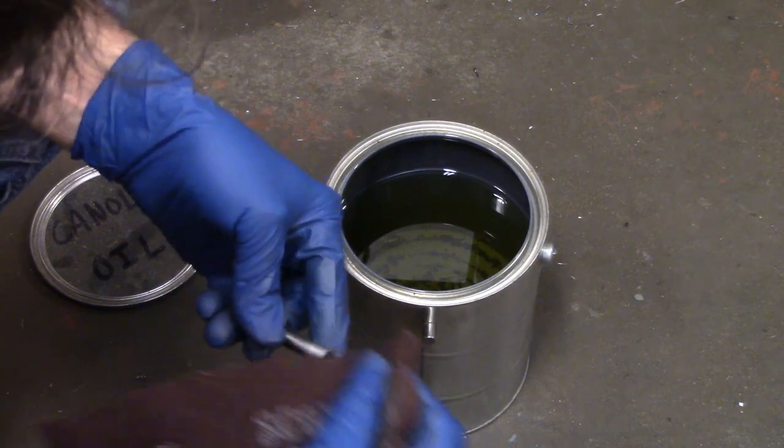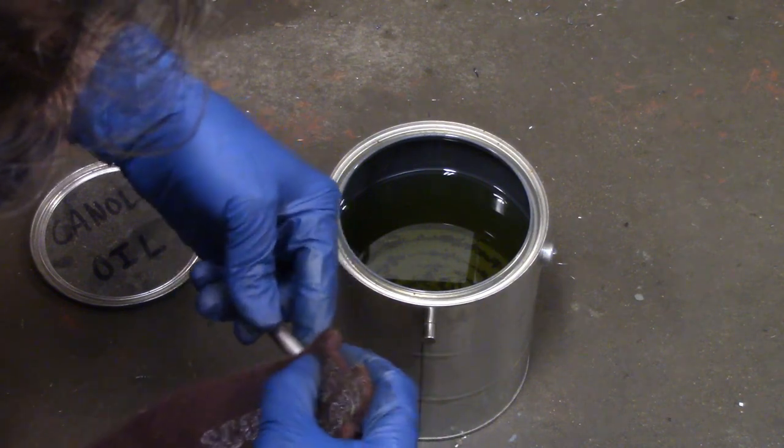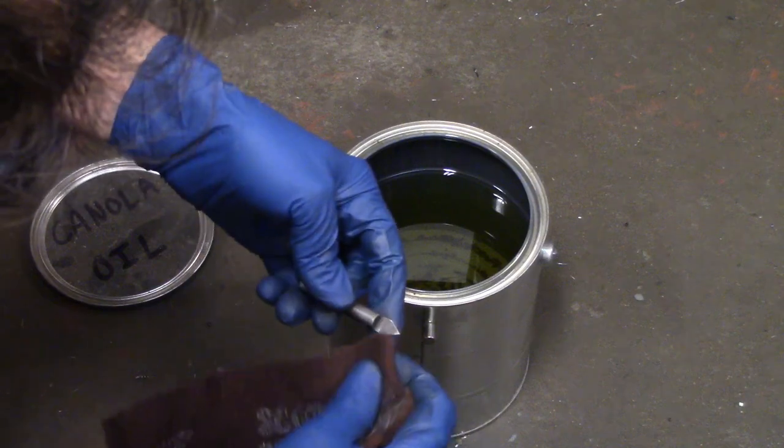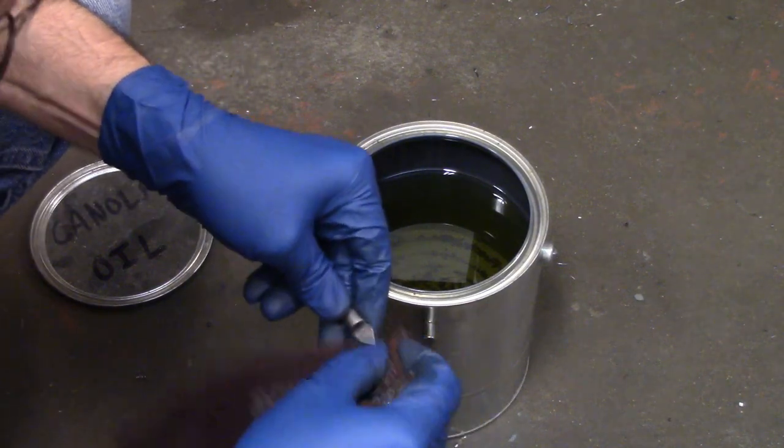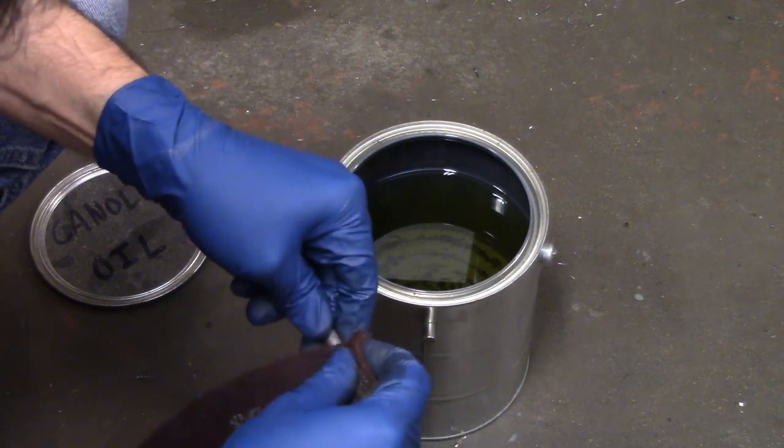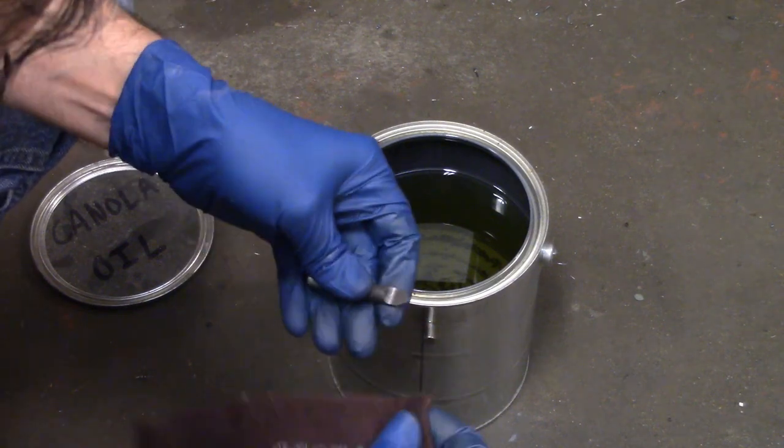I want this to be a metal cutting blade, so I'm going to make this a nice light straw color up at the tip. That's the very first color you should see when heat treating, when heating steel.